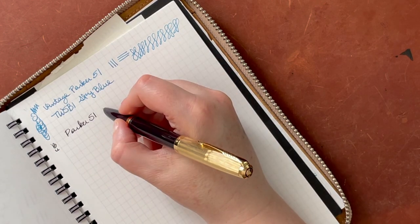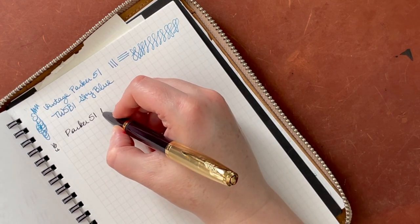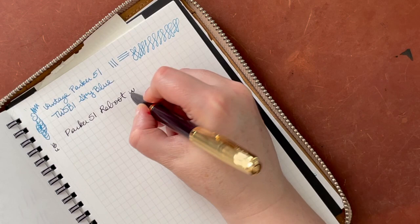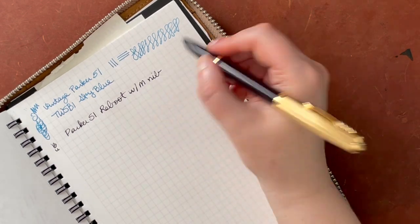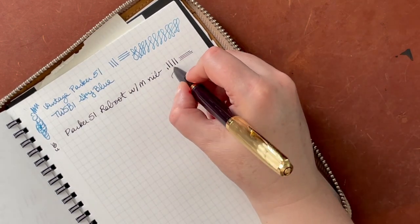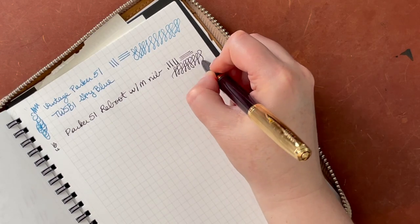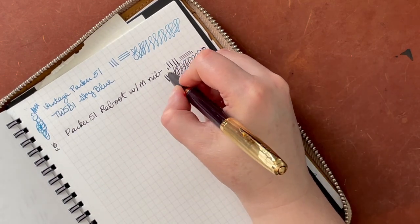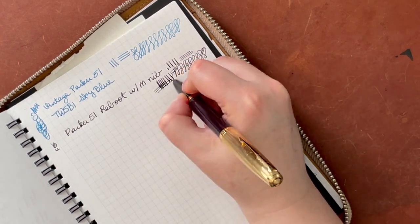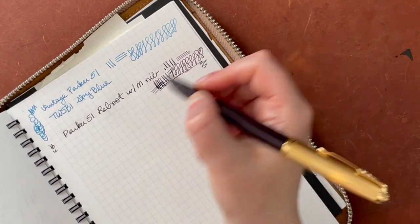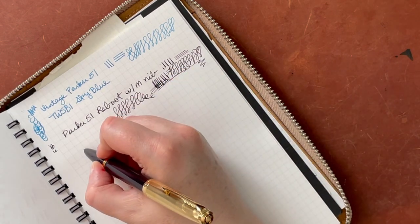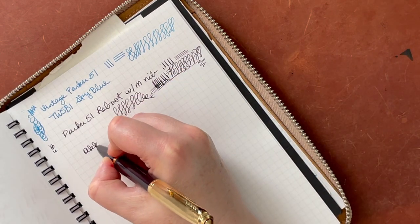So this is the Parker 51... oops, let's see, yeah see that's the example - I have to make sure I have it at the right angle. Parker 51, I'm gonna call it the reboot. And this I know for sure is a medium nib. Yeah, so I kind of have to get the hang of where is that sweet spot and stay there, because if I don't stay there, I think I had a little over rotated... but when I get it in the right spot it's actually a very smooth and lovely nib.